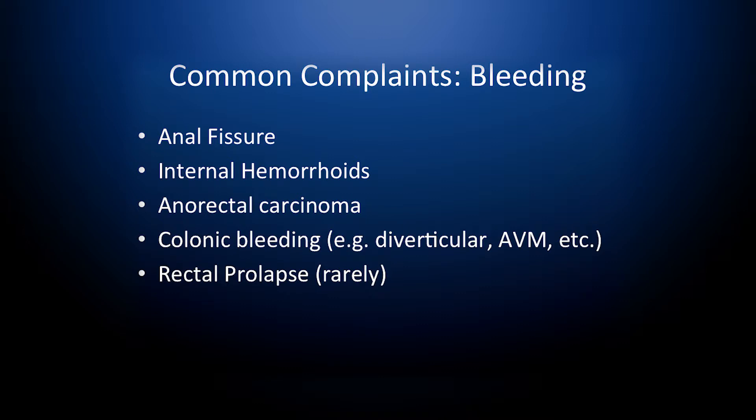Another complaint that patients come in with is anal rectal bleeding. Of course, we have to consider colonic bleeding such as colon cancer, diverticular bleeding, and AVMs. However, other anal rectal causes are possible such as an anal fissure, which is probably very common, internal hemorrhoids, or anal rectal carcinoma, which can be picked up at the time of anoscopy, colonoscopy, or flexible sigmoidoscopy. Rectal prolapse can occasionally cause anorectal bleeding as well.